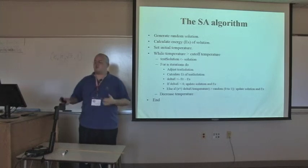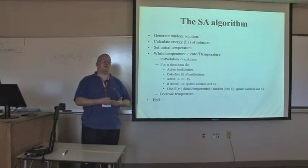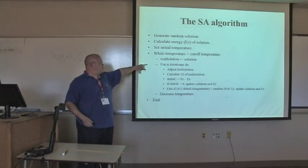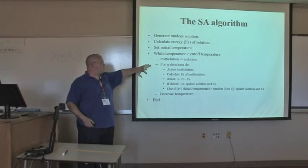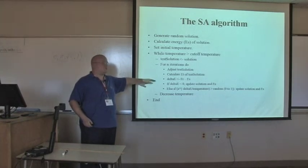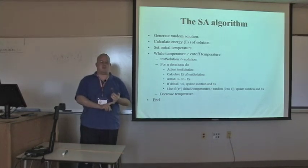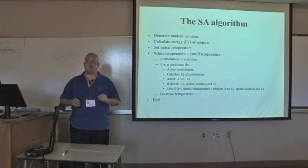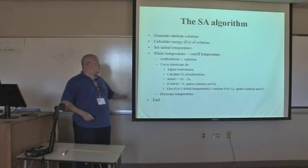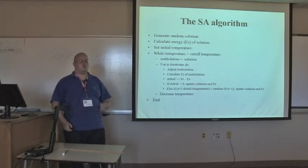All right. First thing we do is take whatever our current working solution is, and we're going to dump that into a test solution. And that's what we're going to be manipulating and testing. And then for N iterations, what these are are Monte Carlo cycles. And I'll come back and show you what that is kind of visually in just a minute. But for however many Monte Carlo cycles we've chosen to use, we're going to go through this process here where we first adjust that test solution. And usually that's just one or two small changes made to it. And then we're going to calculate the energy of that resulting solution.